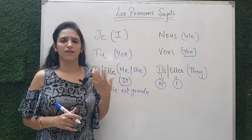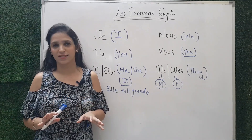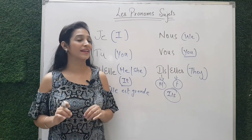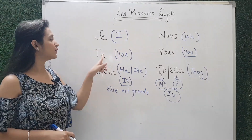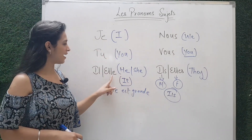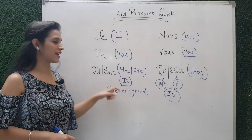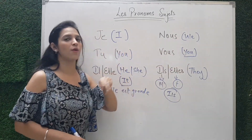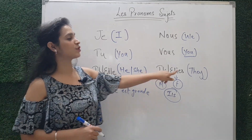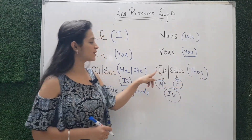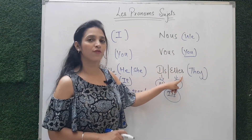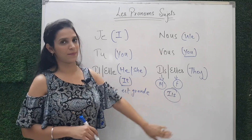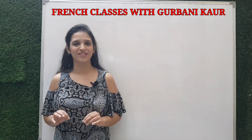A question often asked is: what if a group has both girls and boys? In that case, we use ils. To quickly recap: je means I, tu means you (informal), il means he or it, elle means she or it, nous means we, vous means you (formal/plural), ils means they (masculine or mixed group), and elles means they (feminine group).